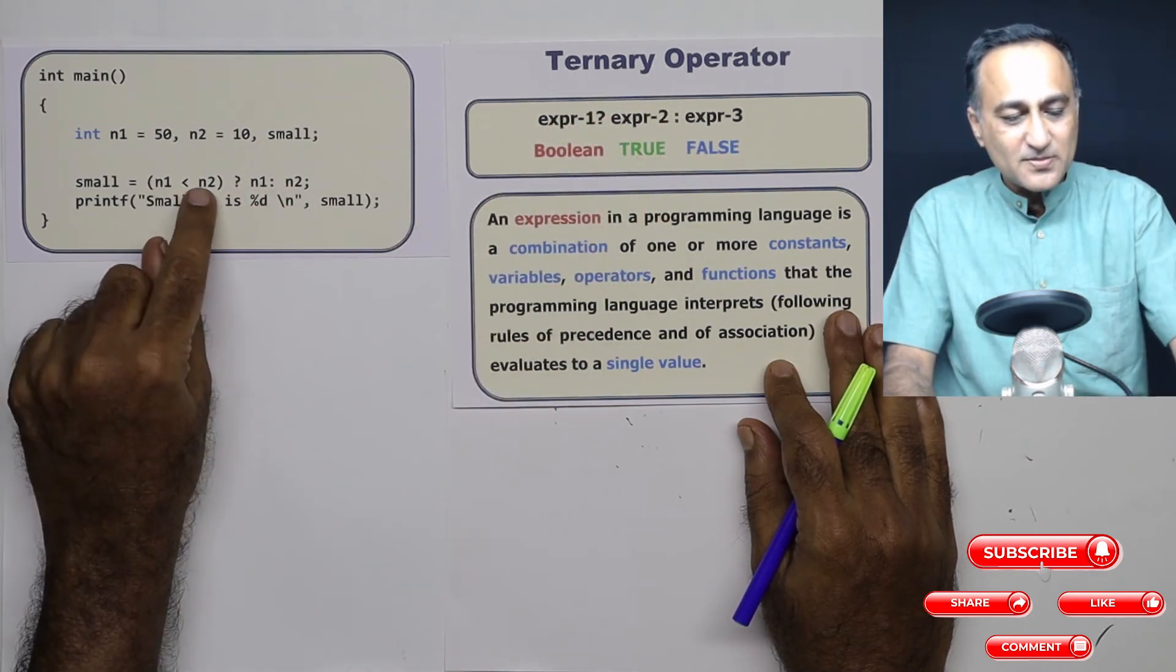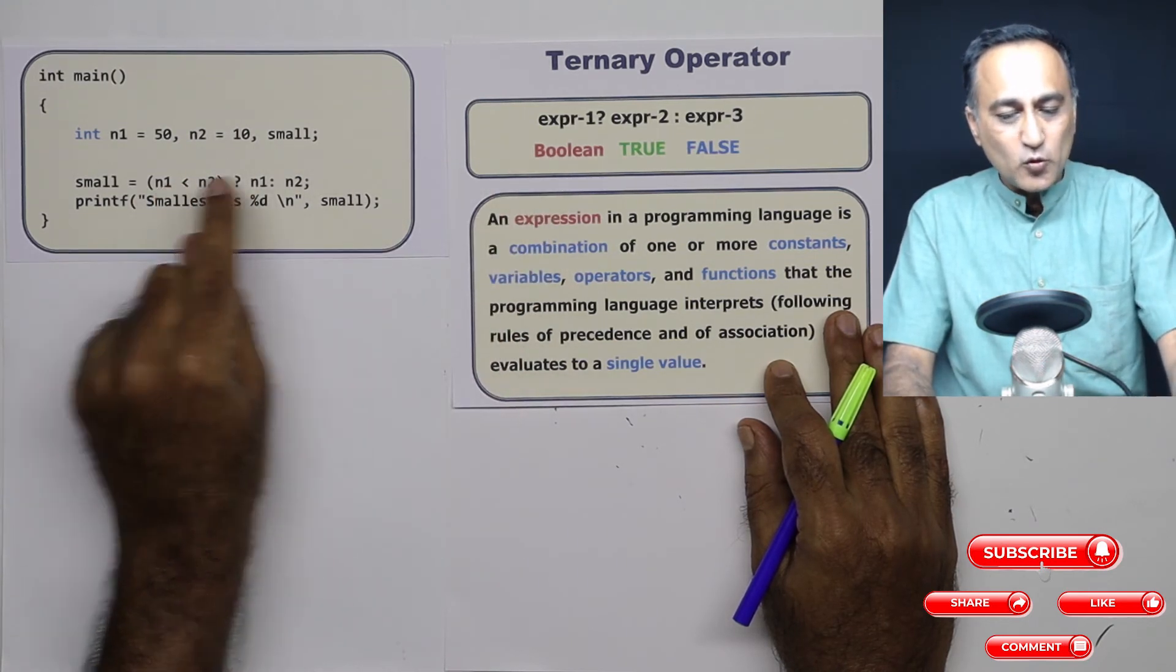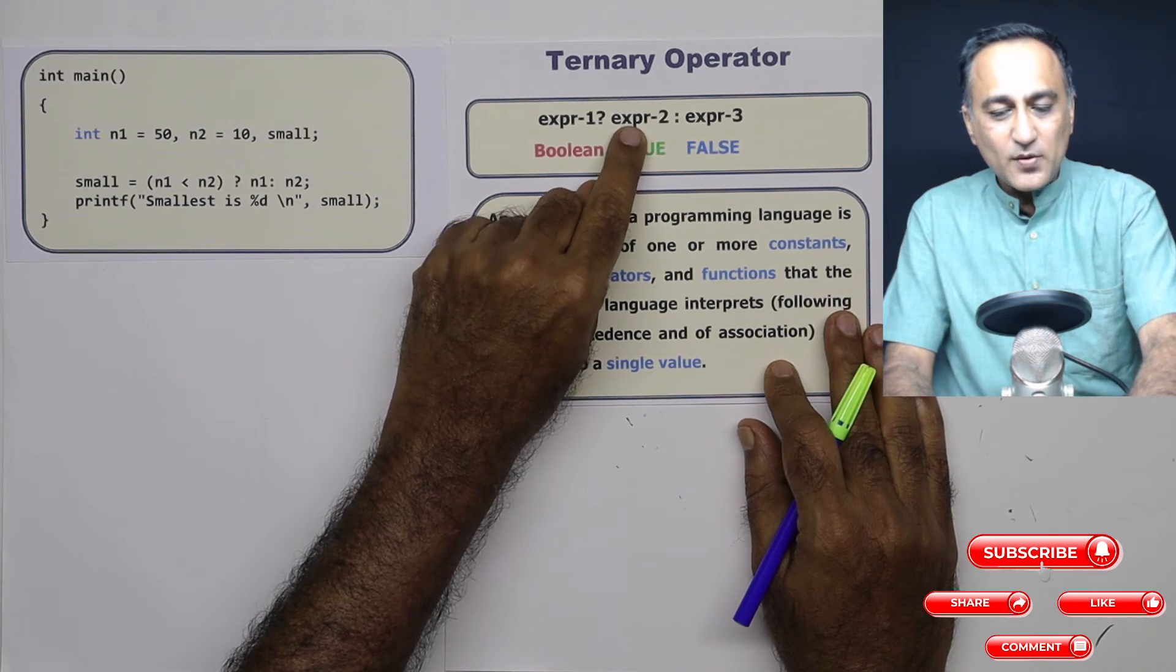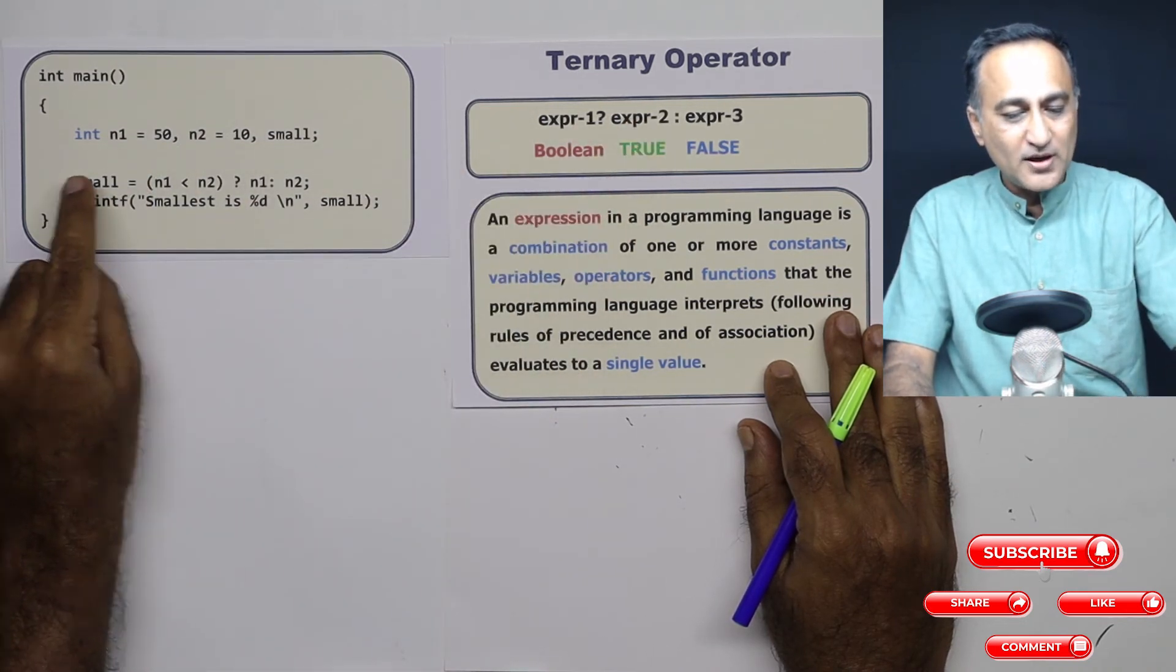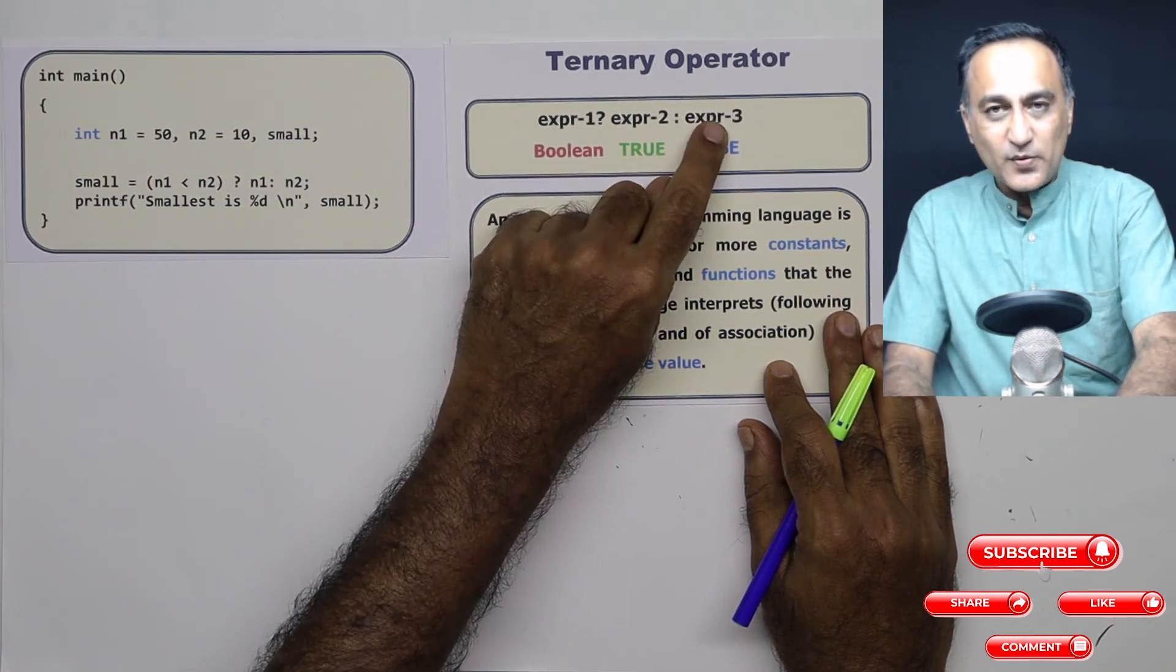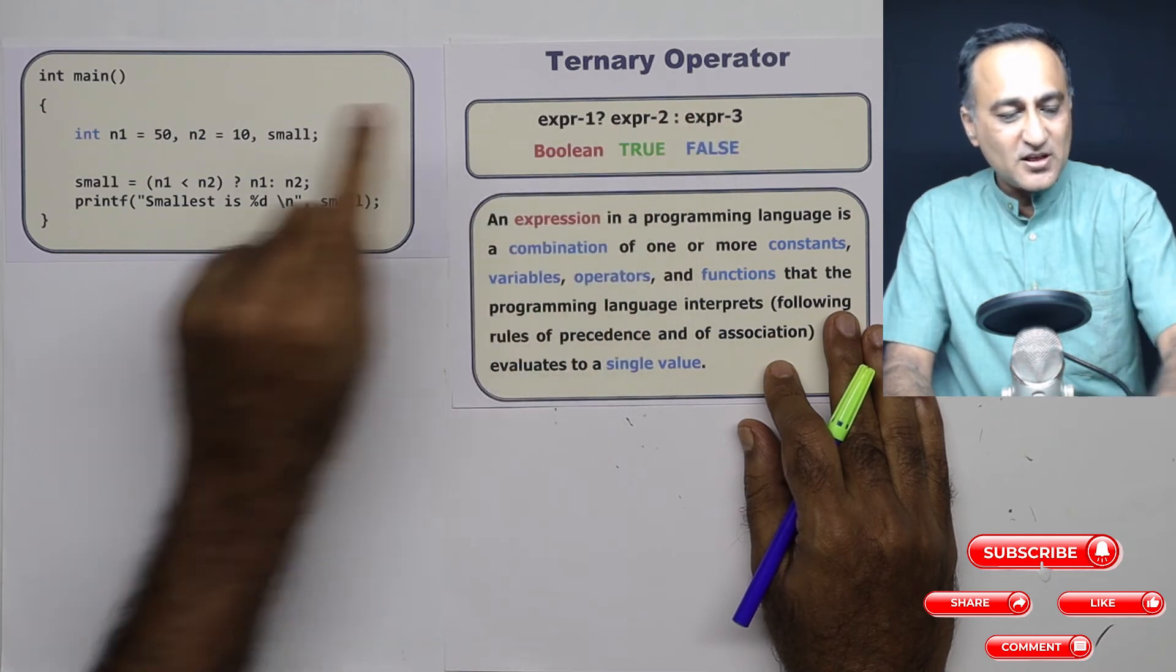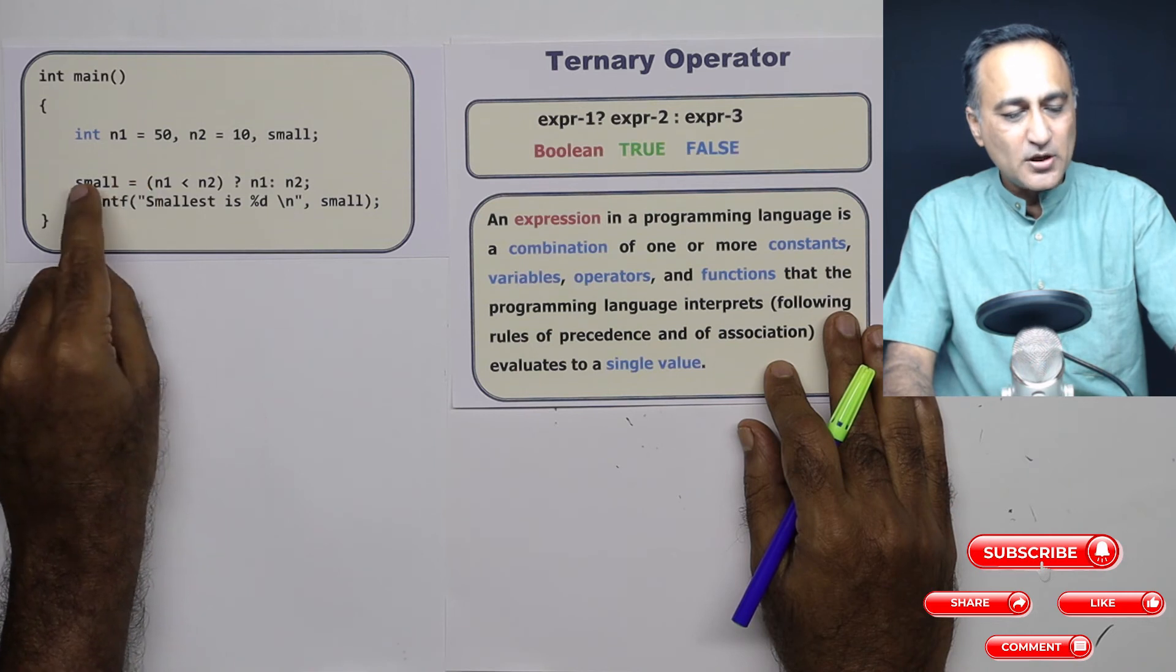The result of this must always be Boolean, it must be true or false. If this result happens to be true, then the evaluation of expression two takes place and the result of this goes into small. If the evaluation of the Boolean expression leads to a false condition, expression three is evaluated. And the result of expression three gets assigned to small as in this case, where n2 is assigned to small.